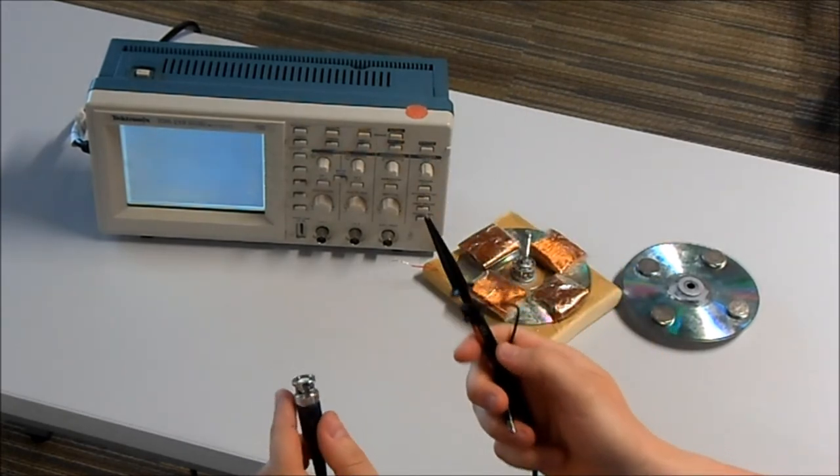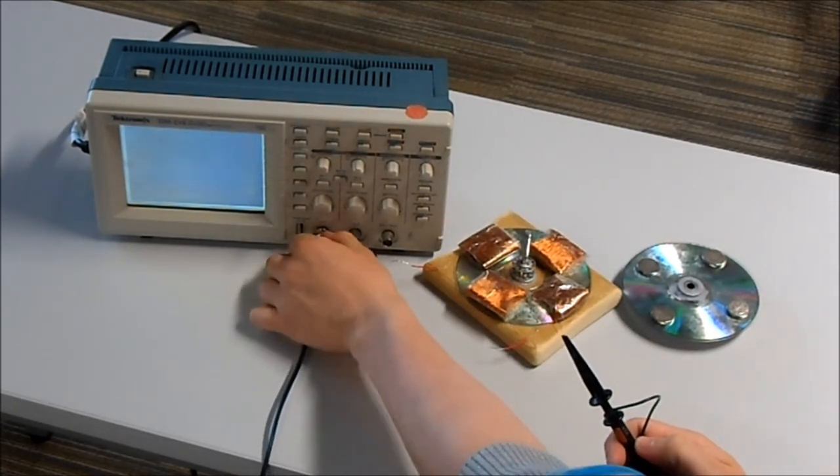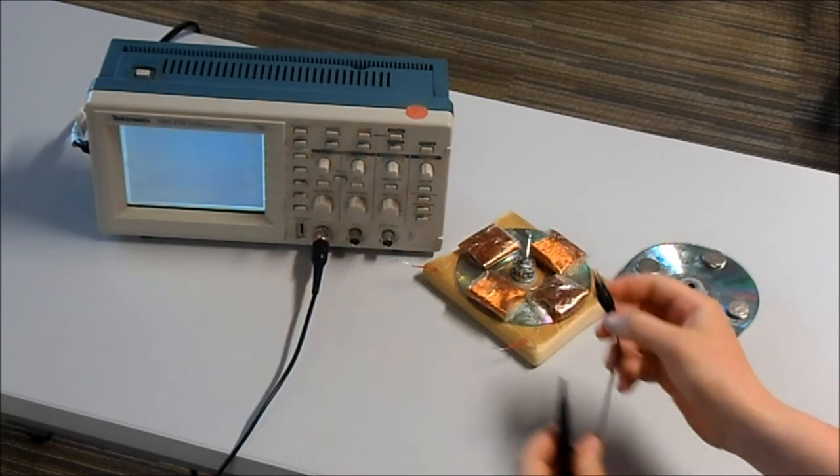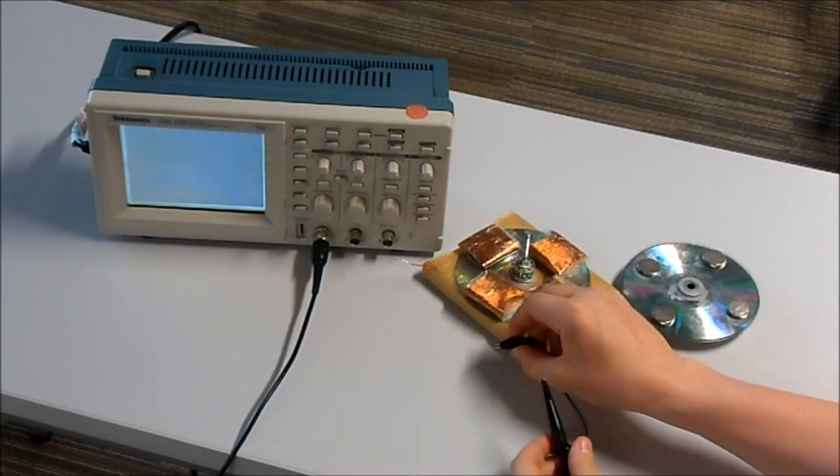First the wires from the oscilloscope. We plug this end into channel one of the oscilloscope. Now with the croc clips we connect to the CD generator through the thicker wire.